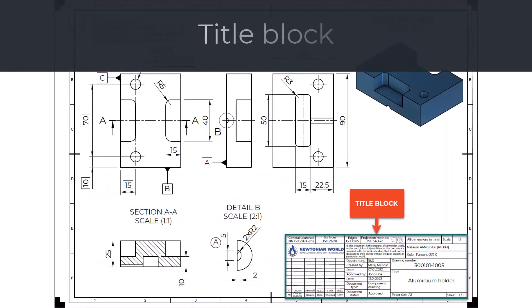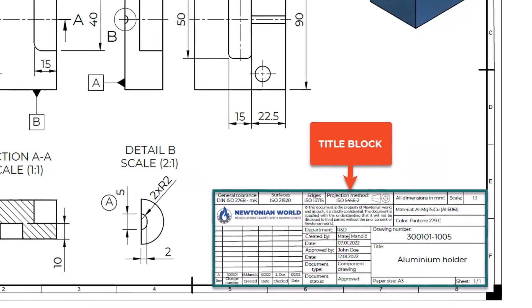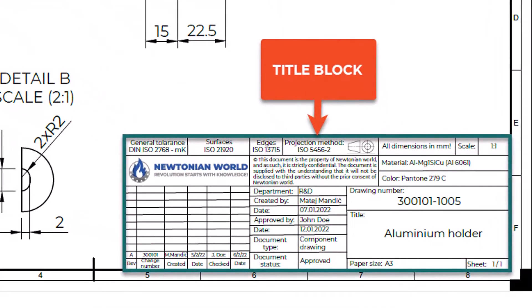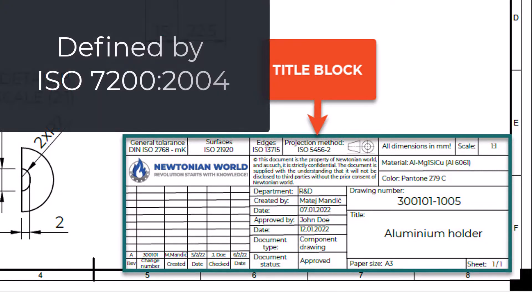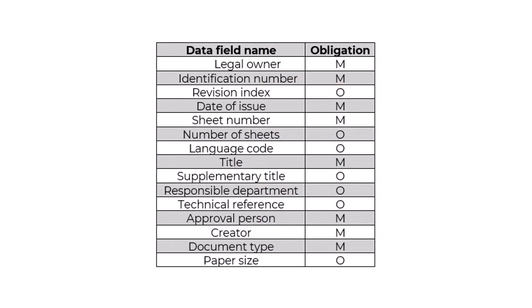Title Block. The title block contains all the relevant information needed to identify the drawing — for example, part number, part name, drawing owner, designer name, etc. Furthermore, a title block defines other relevant information such as material, standard, perspective type, scale, page number, etc. The title block is defined by ISO 7200:2004. Data fields in the title block can be divided into two groups: mandatory (M) and optional (O).